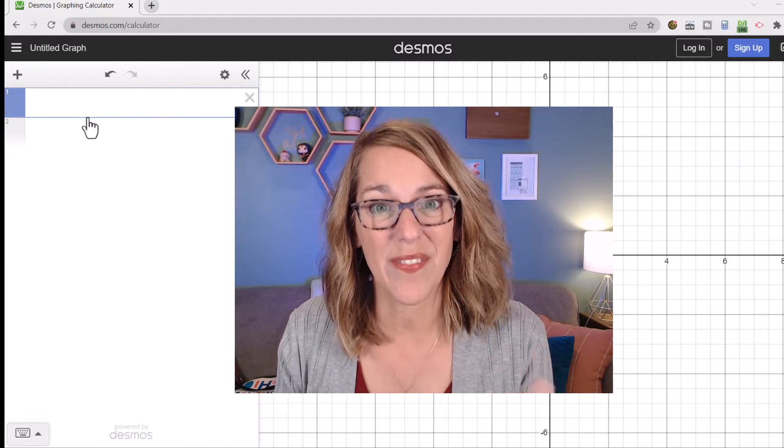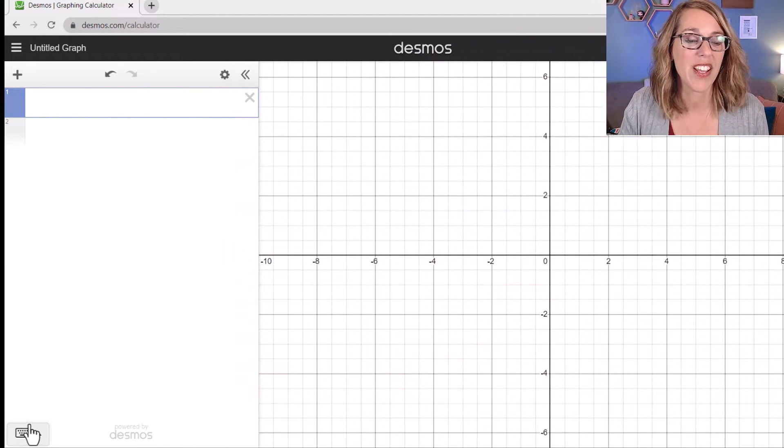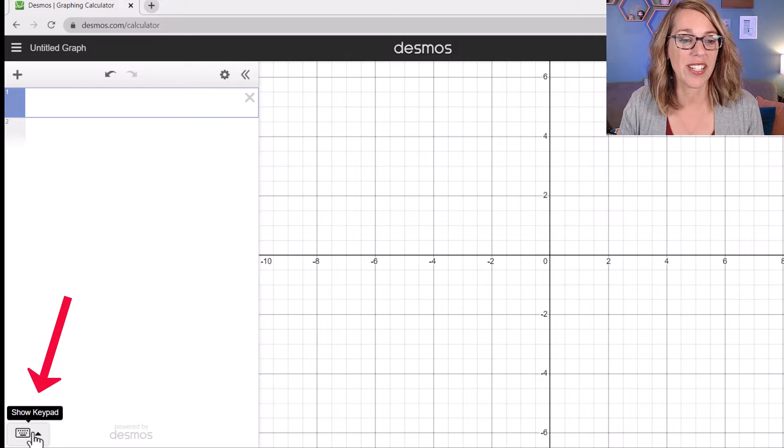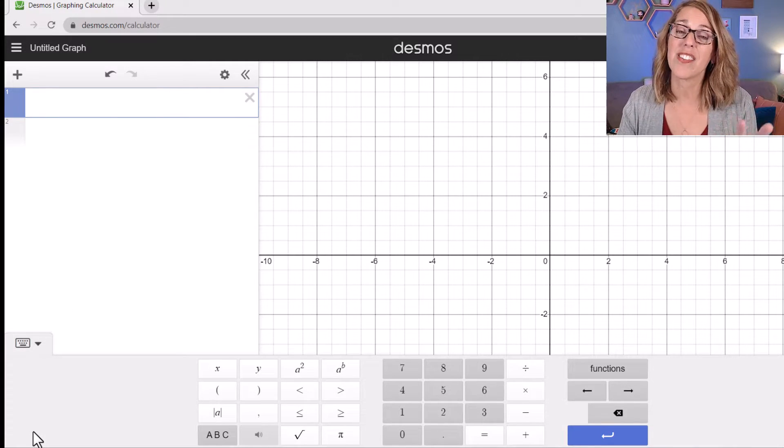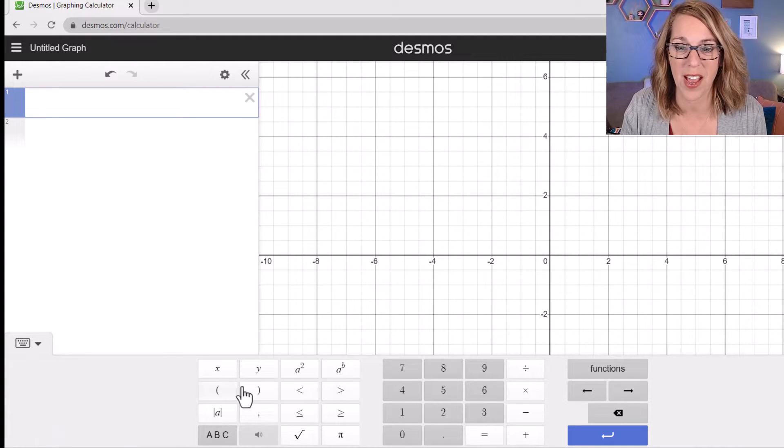We're going to start with the normal dist function in Desmos. There's two ways that you can get there.